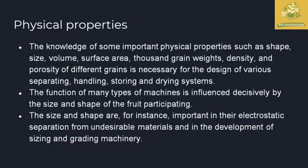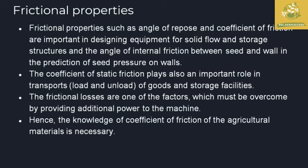Physical properties are the characteristic nature of a particular food material or agricultural product. Important physical properties include size, shape, volume, thousand-grain weight for seeds, density, and porosity of grains. These are designed for the design of separation, handling, storing, and drying systems. Size and shape influence the function of many types of machines and are important for electrostatic separation from undesirable material and grading.